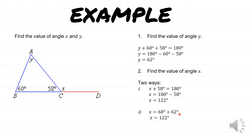I personally will use method number one because it does not involve y. So if you calculated the value of y wrongly and you use the second method, you will get the answer for x wrong also. That's why I personally prefer method number one.